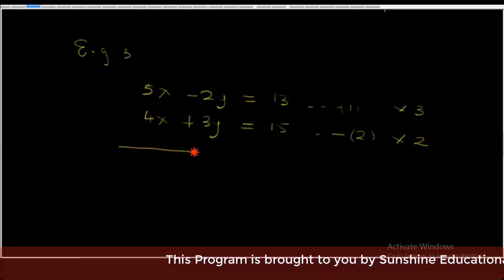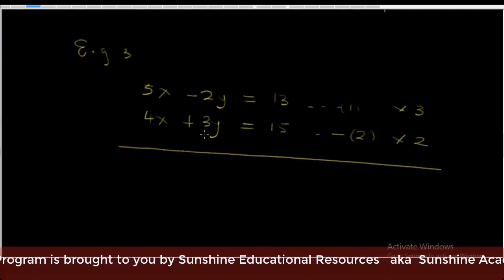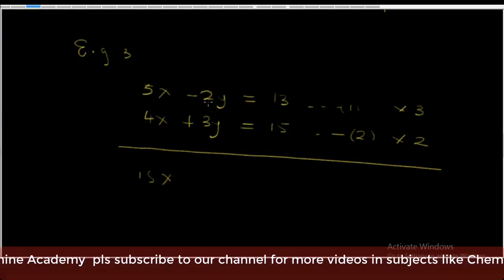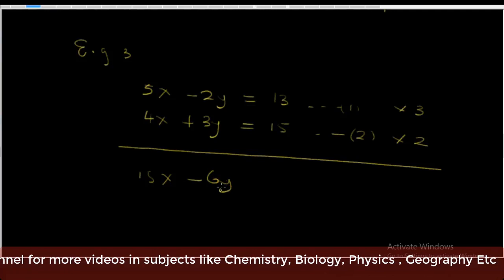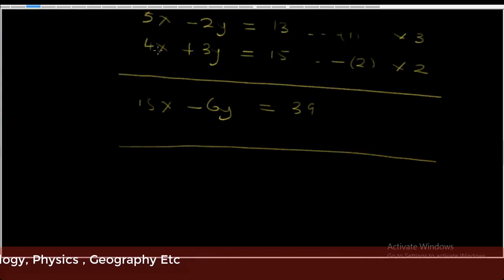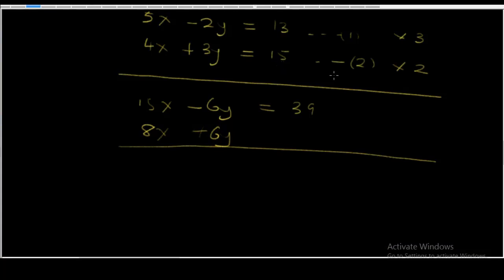We multiply equation 1 by 3 and equation 2 by 2. So 5x times 3 gives 15x; minus 2y times 3 gives minus 6y; and the right side gives 39. Then 4x times 2 gives 8x; 3y times 2 gives plus 6y; and 15 times 2 gives 30. Now let's add the two equations: 15x plus 8x gives 23x, and the y terms cancel.